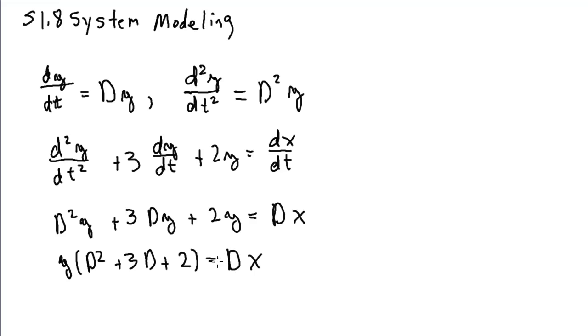One other thing I want to mention is that this kind of multiplication by d corresponds to differentiation. One over d corresponds to actually integration. So the integral from minus infinity to t of y of tau with respect to tau, we can represent that integral as 1 over d times y.